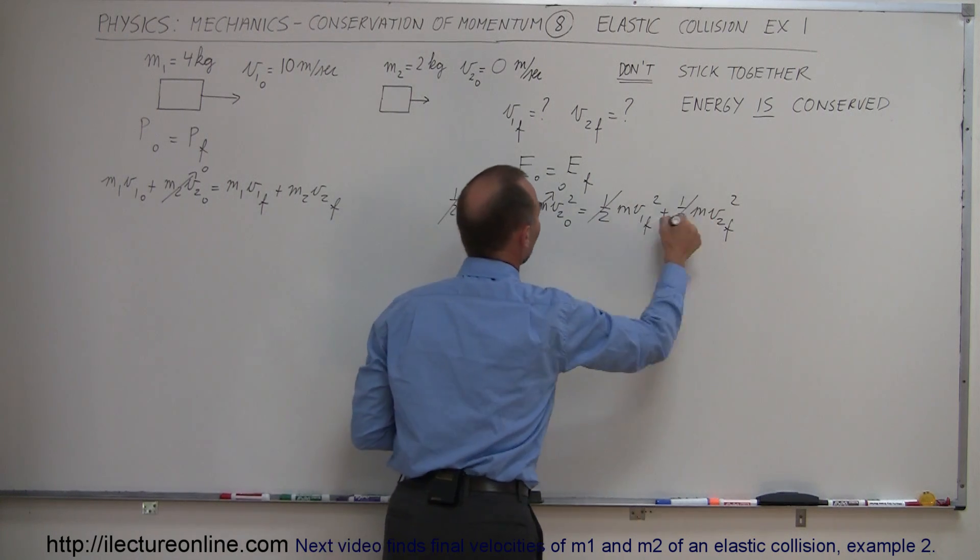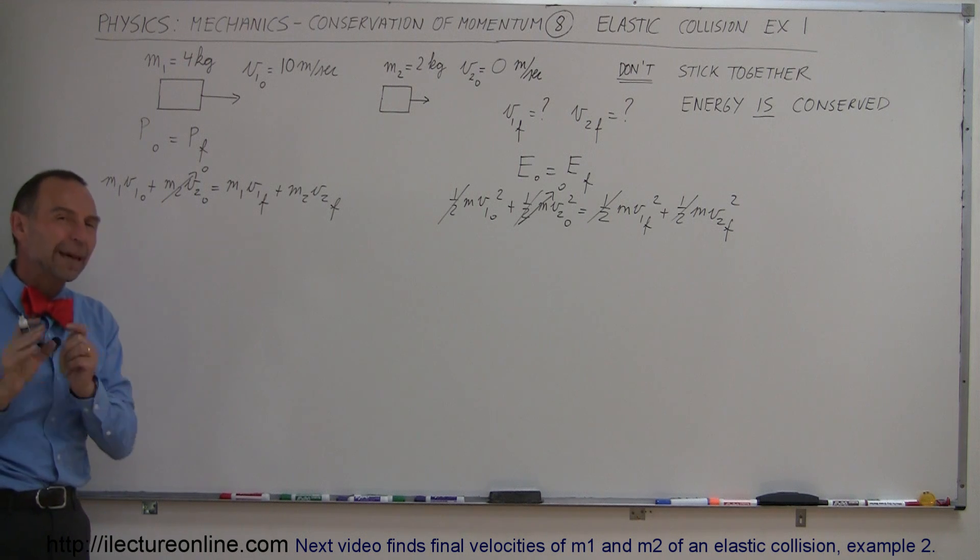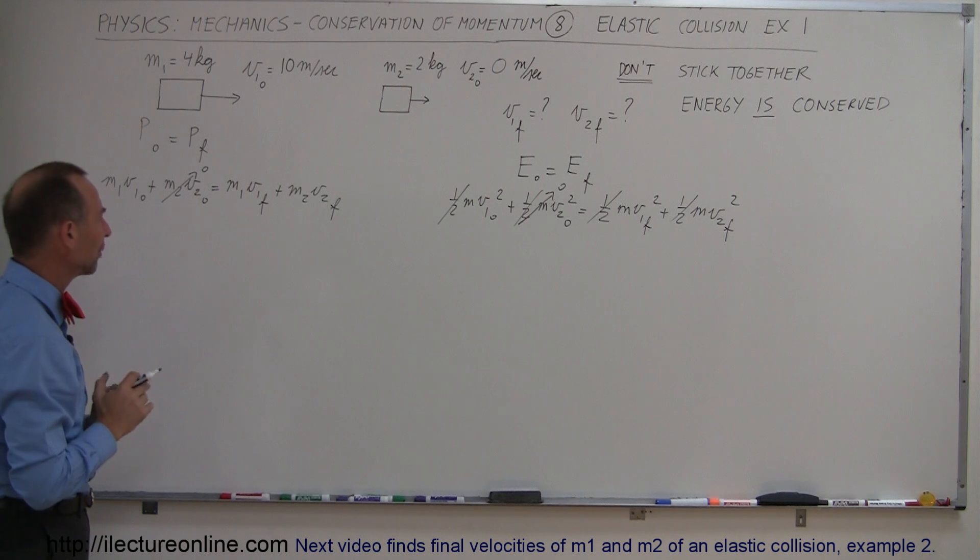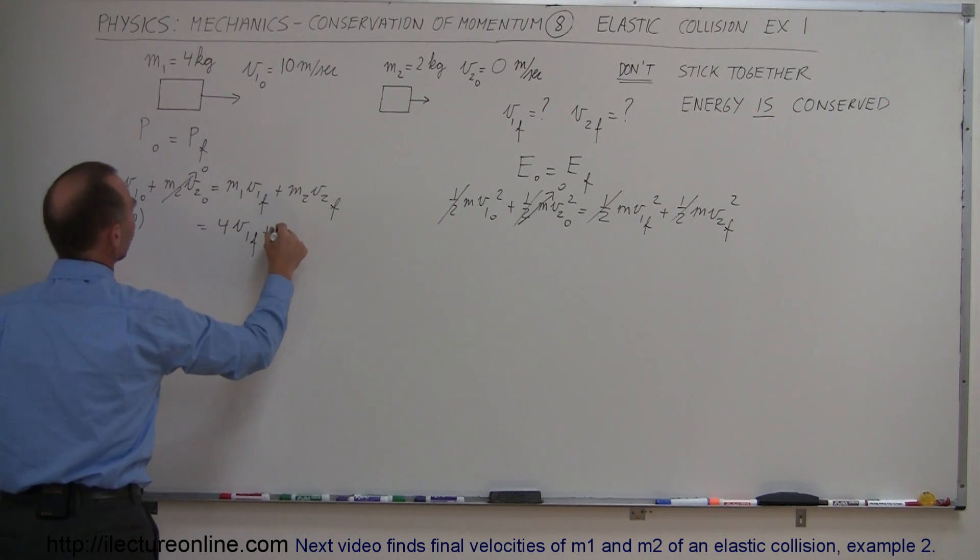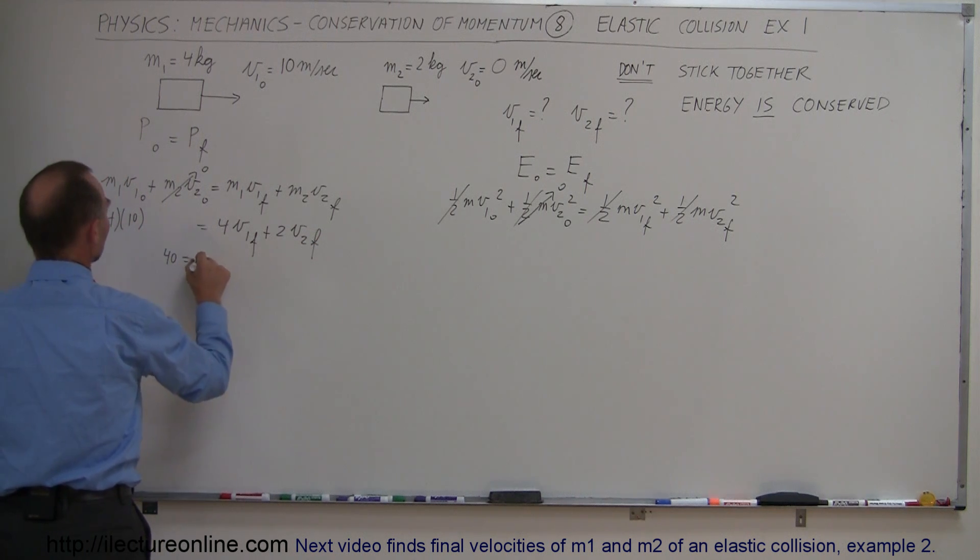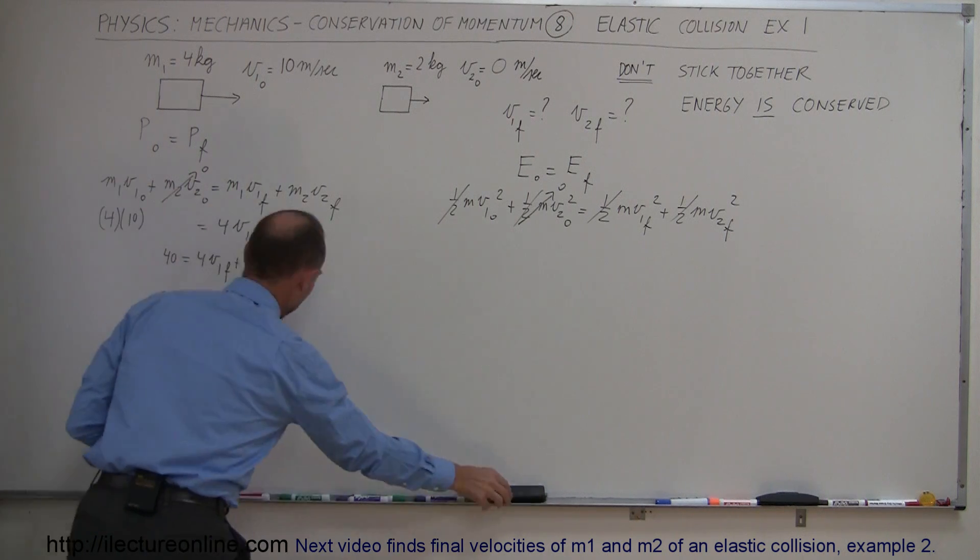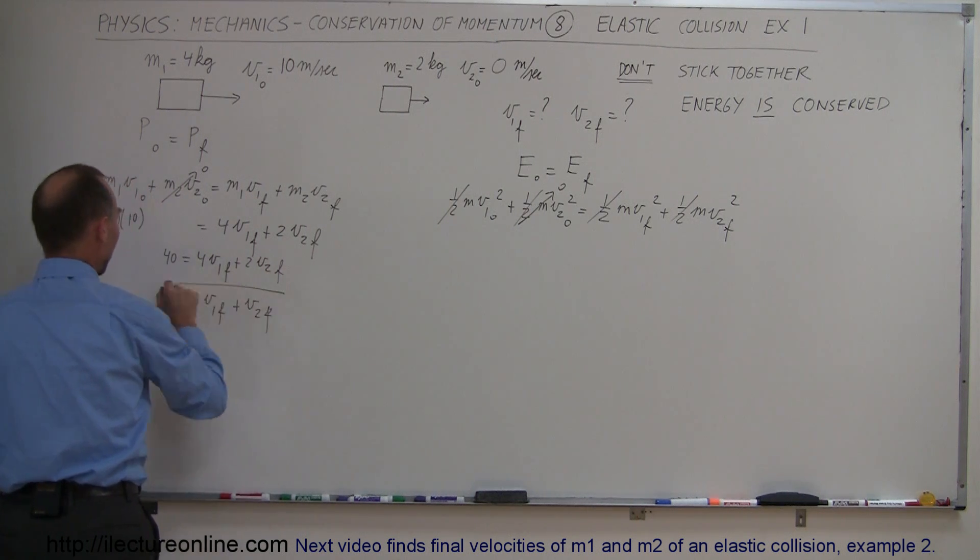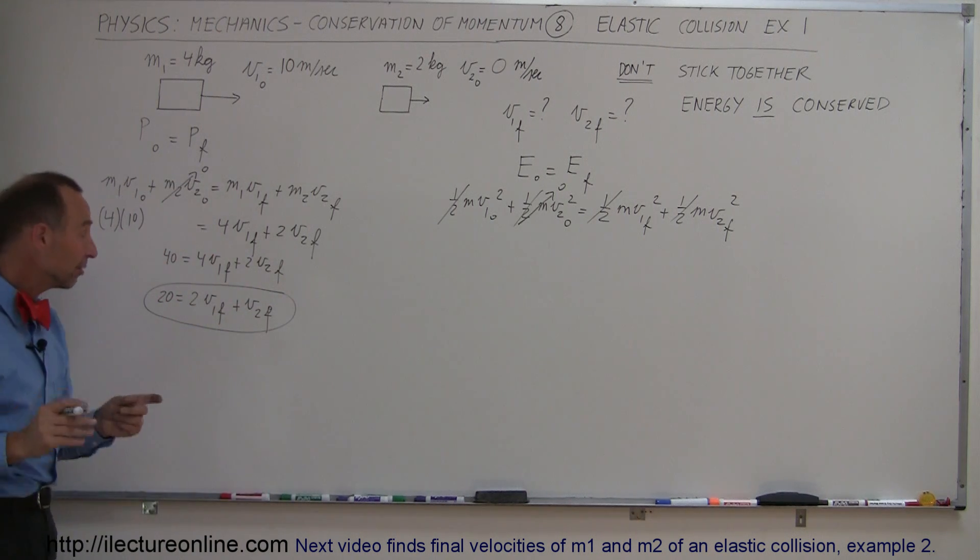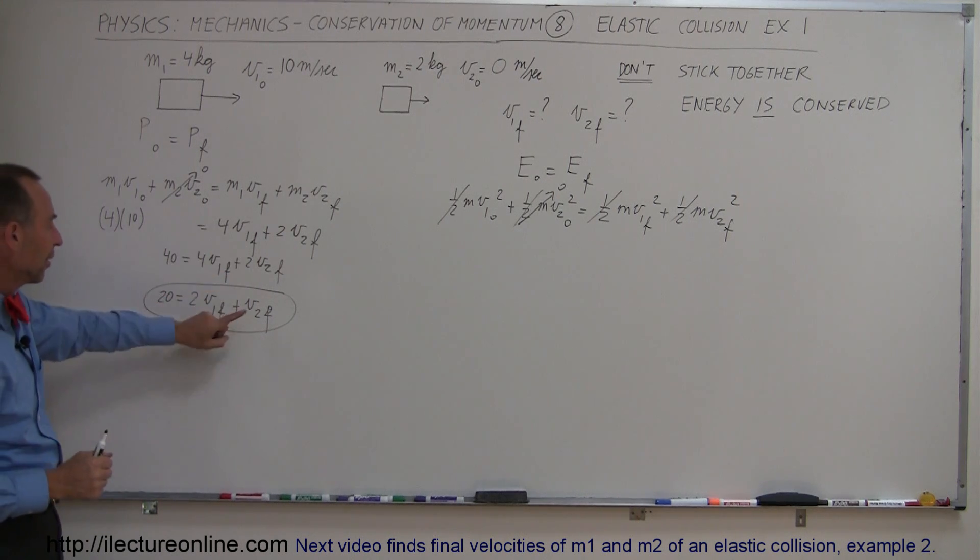So we can make this go to zero because the second block is not moving before the collision. This goes to zero as well. Also here, notice that all the one halves cancel out. So we don't need the one halves. Simplifying this as much as possible by plugging in the numbers that we have, I'm going to leave off the units to make it a lot cleaner. So M1V1, we have 4 kilograms times 10 meters per second equals 4 times V1 final plus 2 times V2 final. So here we have 40 equals 4V1 final plus 2V2 final. Dividing both sides by 2, we get 20 equals 2V1 final plus V2 final. So here I have my first equation that relates V1 final and V2 final together. But remember, we have two unknowns, so we cannot yet solve this equation.